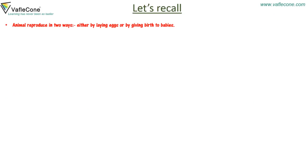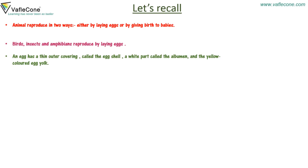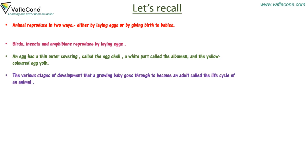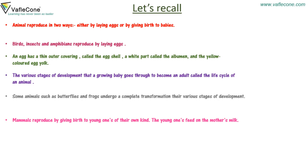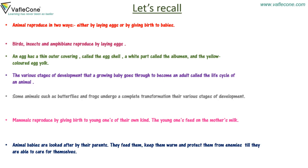Let's recall: Animals reproduce in two ways — either by laying eggs or by giving birth to babies. Birds, insects and amphibians reproduce by laying eggs. An egg has a thin outer covering called the egg shell, a white part called the albumin, and the yellow-colored egg yolk. The various stages of development that a growing baby goes through to become an adult is called the life cycle of an animal. Some animals such as butterflies and frogs undergo a complete transformation through their various stages of development. Mammals reproduce by giving birth to young ones of their own kind, and the young ones feed on the mother's milk. Animal babies are looked after by their parents — they are fed, kept warm and protected from enemies till they are able to care for themselves.